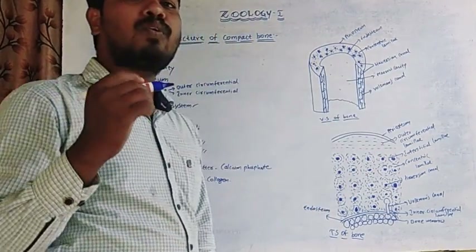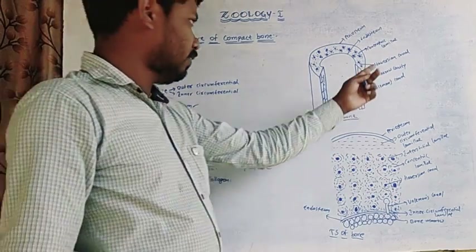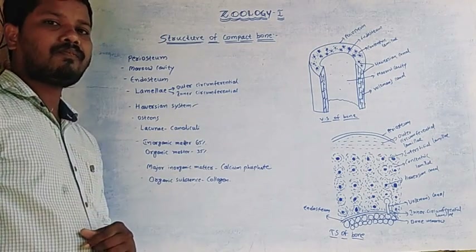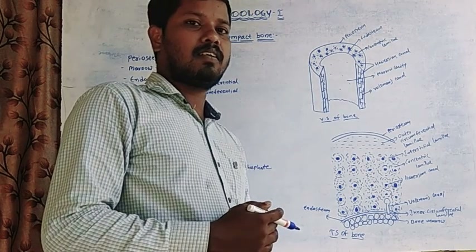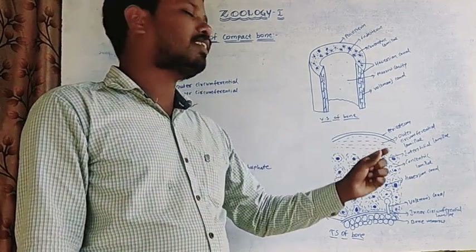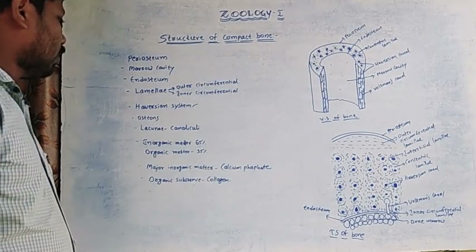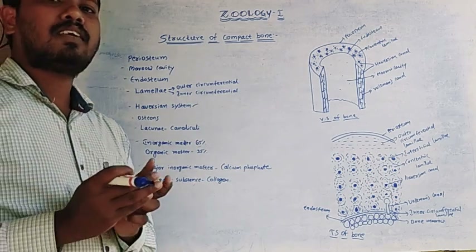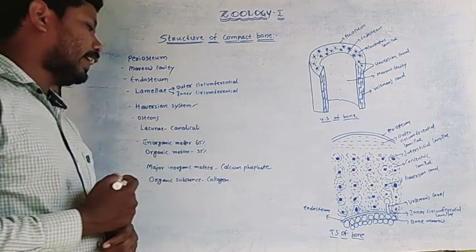The Haversian canal and its surrounding lamellae are collectively called the Haversian system. Osteocytes secrete the osteons, which are the structural and functional units of the bone. These osteons are surrounded by fluid-filled spaces called lacunae. The lacunae constitute the canaliculi.